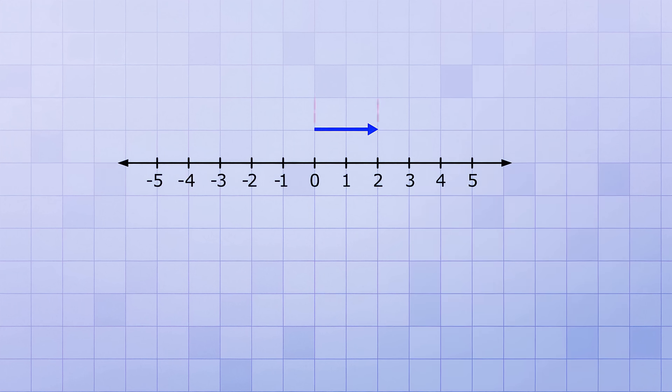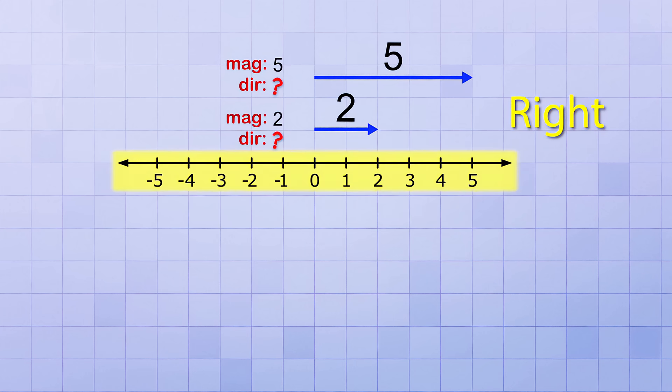This vector has a magnitude of 2 because it starts at 0 and ends at 2. And this vector has a magnitude of 5 because it starts at 0 and goes to 5. Okay, so we know the magnitudes of these vectors, but what about their directions? Well, they're both pointing to the right on your screen. And since we're using the number line as a reference, they're pointing in the positive direction, right?